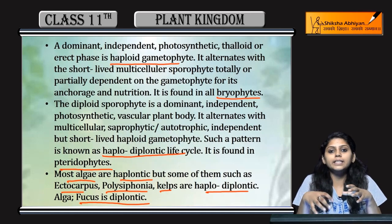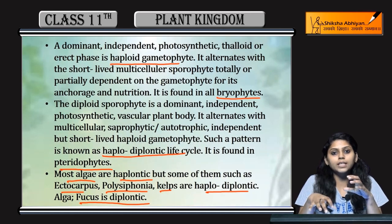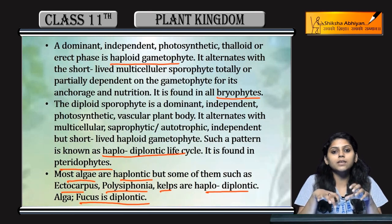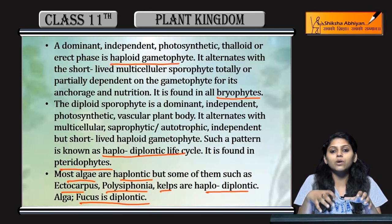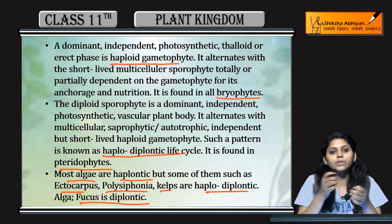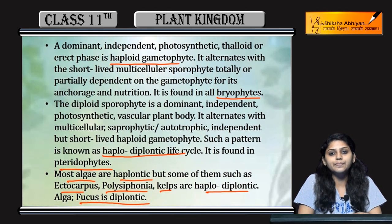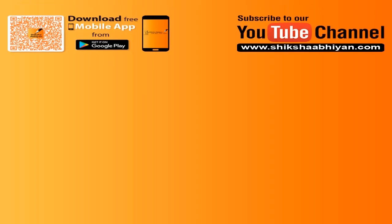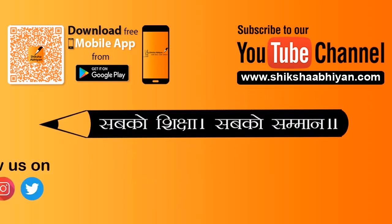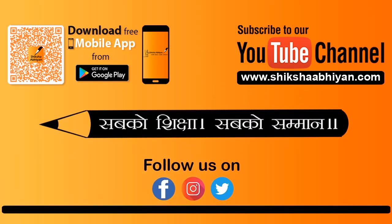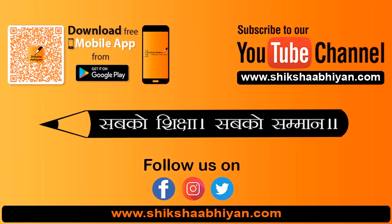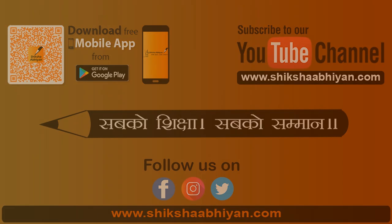So, to summarize: bryophytes are haplontic, pteridophytes are haplodiplontic, and some like Fucus are diplontic. This covers the alternation of generation. This was all about Chapter 3, Plant Kingdom.